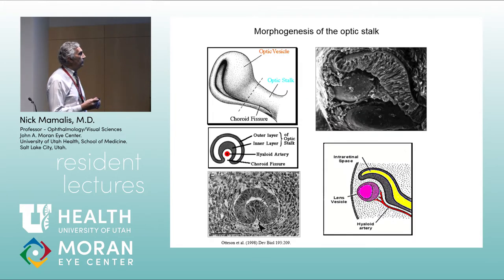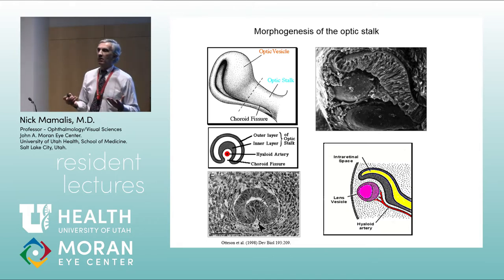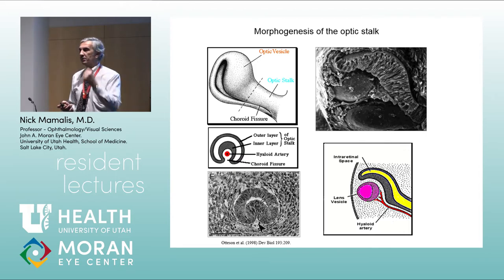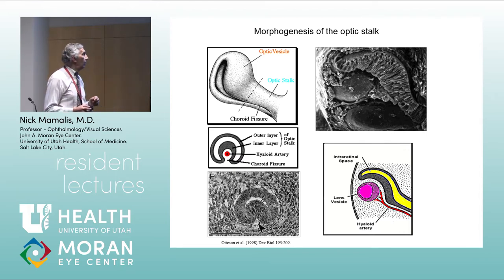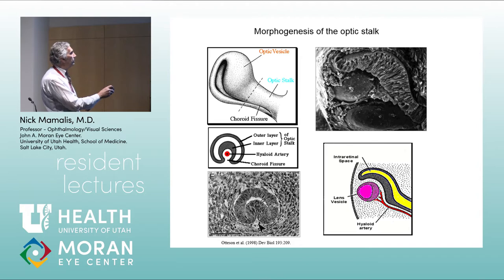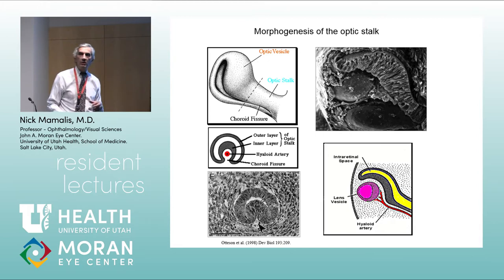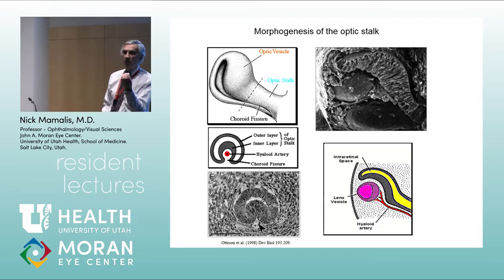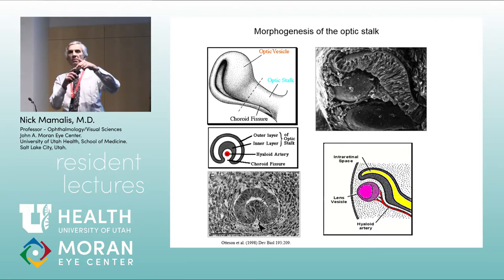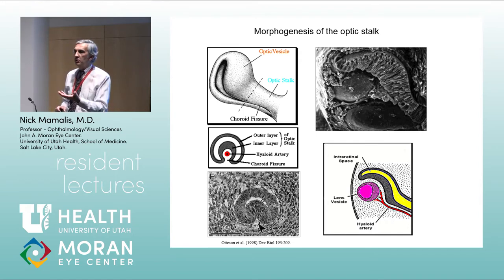While the eye is forming, you have to get blood and nutrients in there to support this rapidly growing structure. There will be a little fissure inferiorly, and through this fissure comes the hyaloid artery. The hyaloid artery branches out all around the lens and provides nourishment to the forming embryological eye. This fissure is important because when it closes off, problems with closure can lead to congenital anomalies — which is why understanding embryology helps explain these conditions.